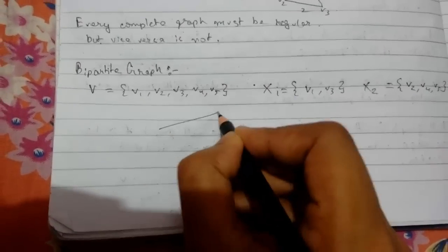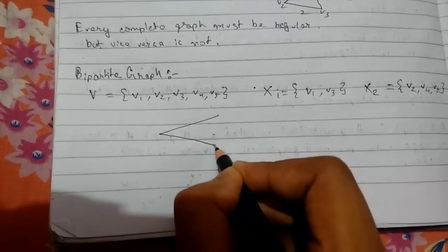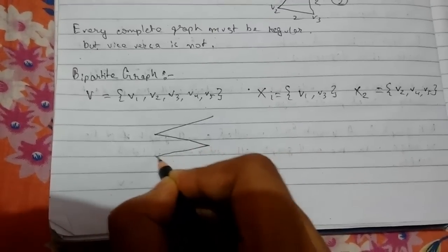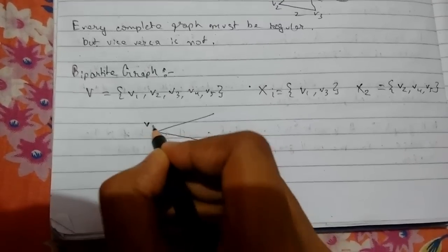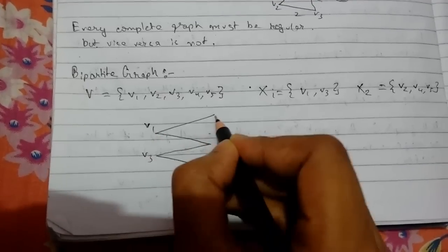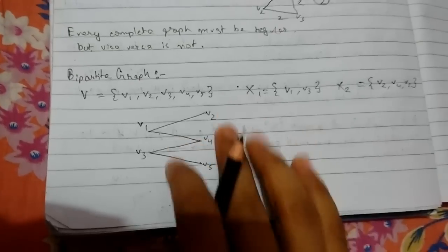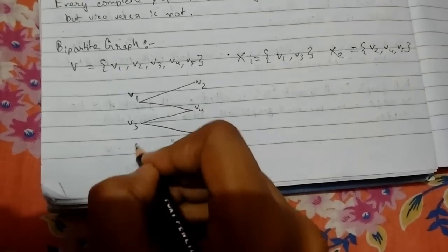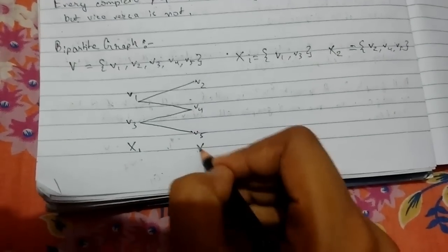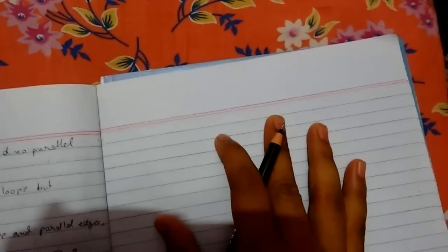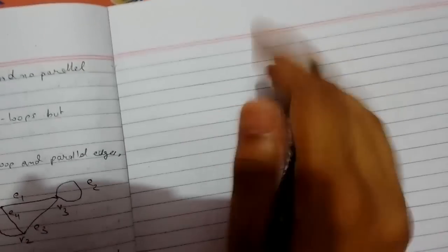This is v1, this is v3, v2, v4, and v5. So this is the graph. This is the x1 subset and x2 subset. Now I'll write what the definition is.